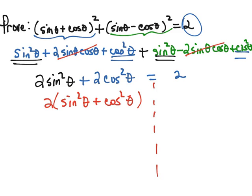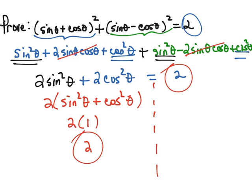That's our first Pythagorean identity: sine squared plus cosine squared is equal to 1. So 2 times 1 is 2, and we've made the left side of our equation equal to the right side of our equation.